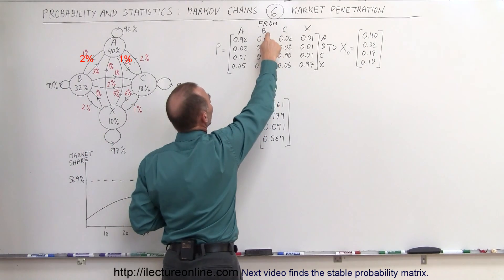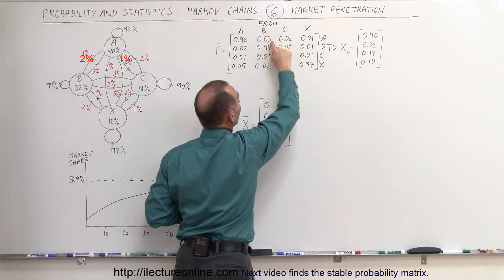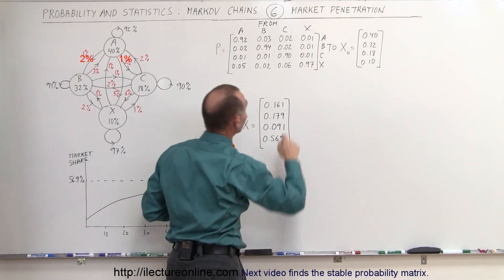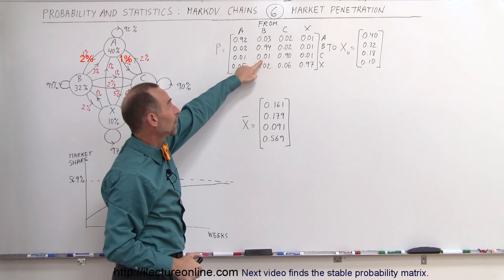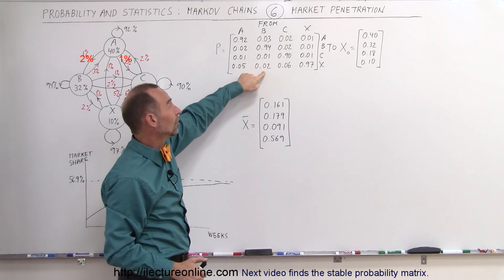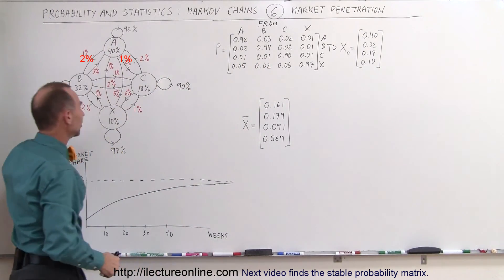Same for brand B: 3% of people who bought brand B will then buy brand A after that, 94% will remain with brand B, 1% will try brand C, and 2% will buy brand X, and so forth. So the probability matrix represents what happens in the market.